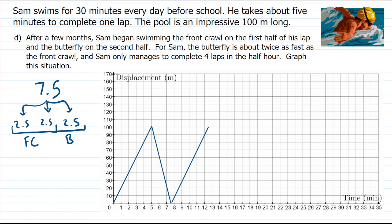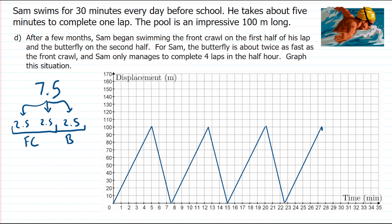Continuing the pattern across the full 30 minutes: five minutes front crawl, two and a half minutes butterfly — repeated four times. The graph shows alternating shallow and steep line segments throughout the half hour. Of course, in reality these wouldn't be perfectly sharp corners since Sam needs to slow down slightly when turning around. That covers several examples of drawing displacement-time graphs.